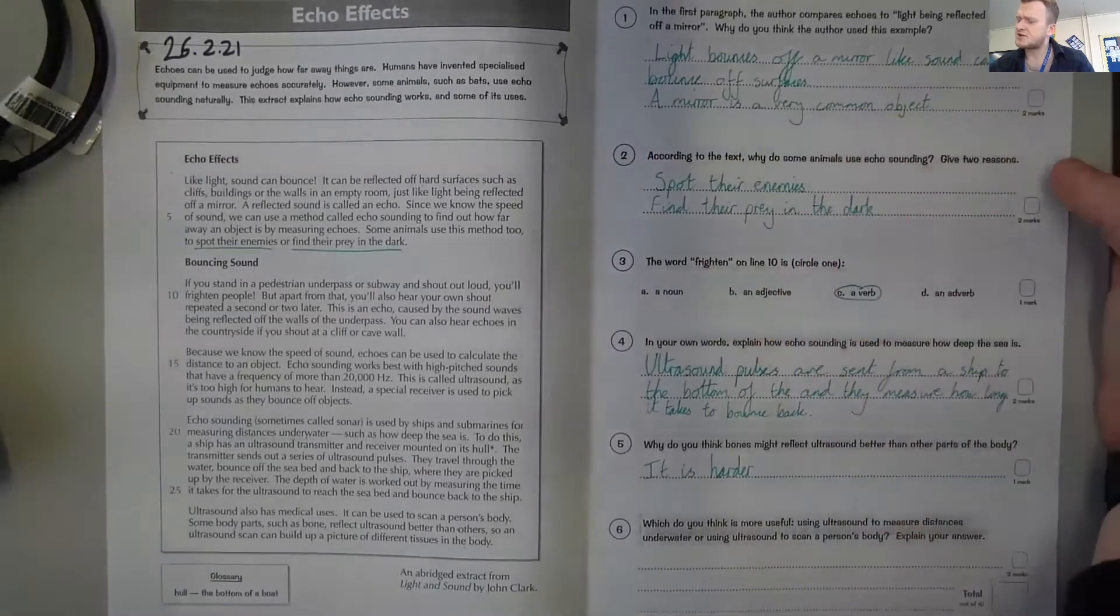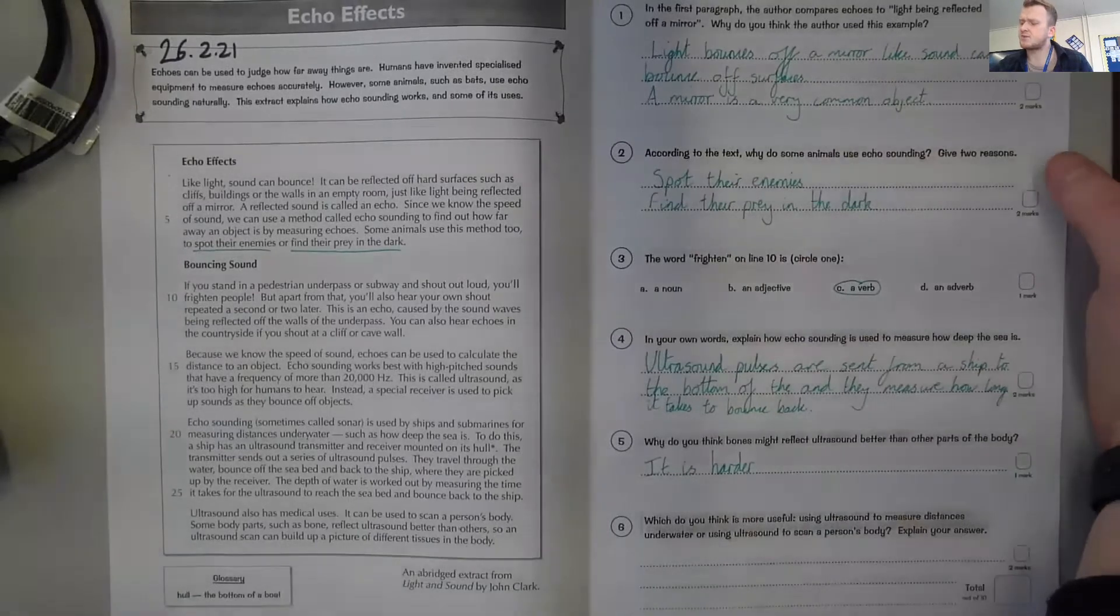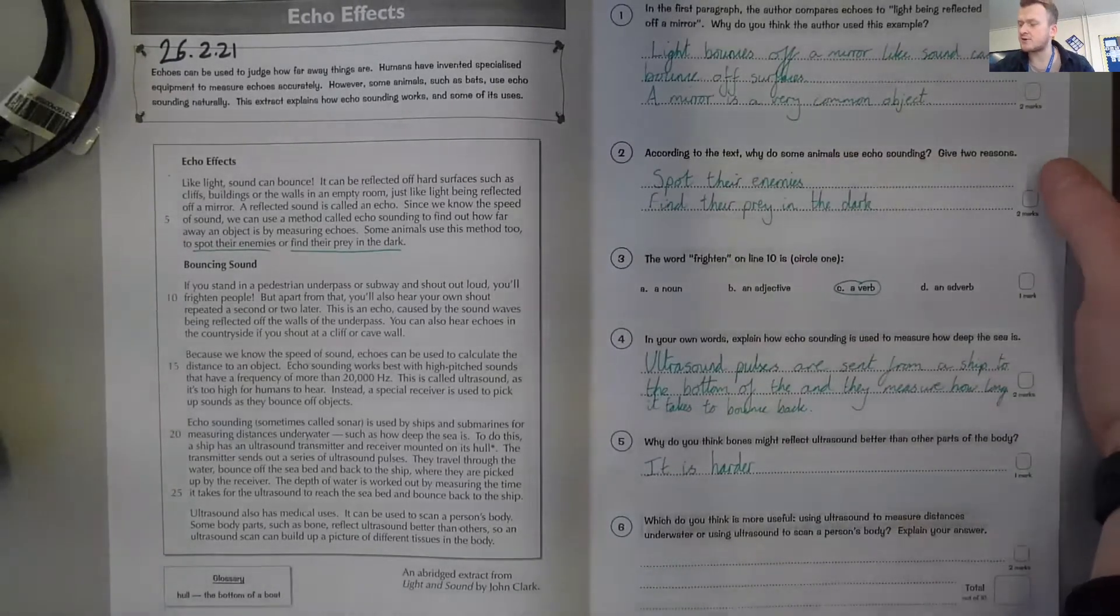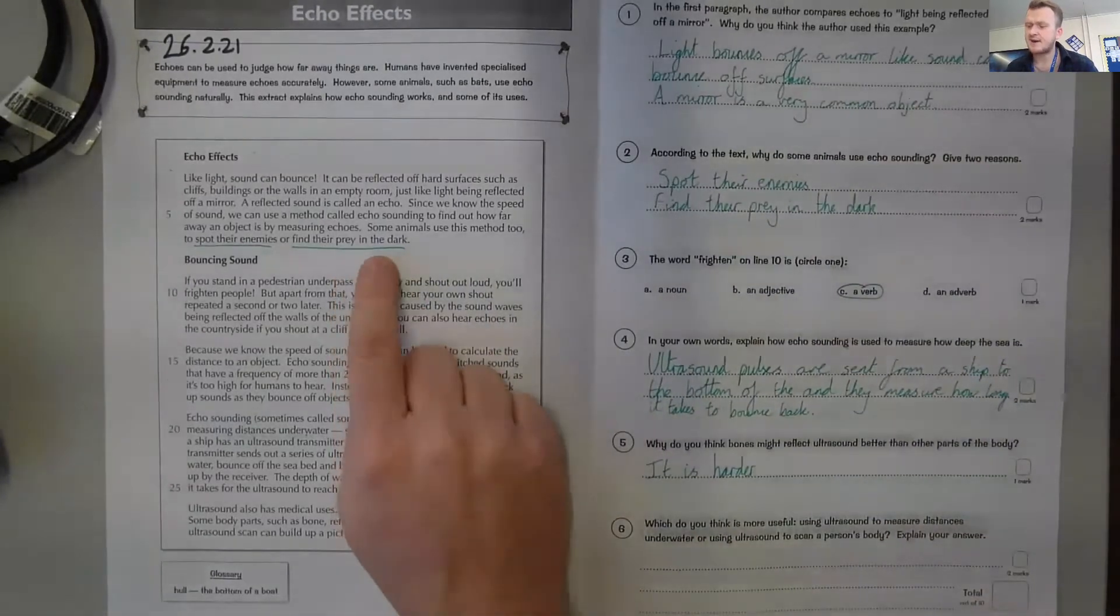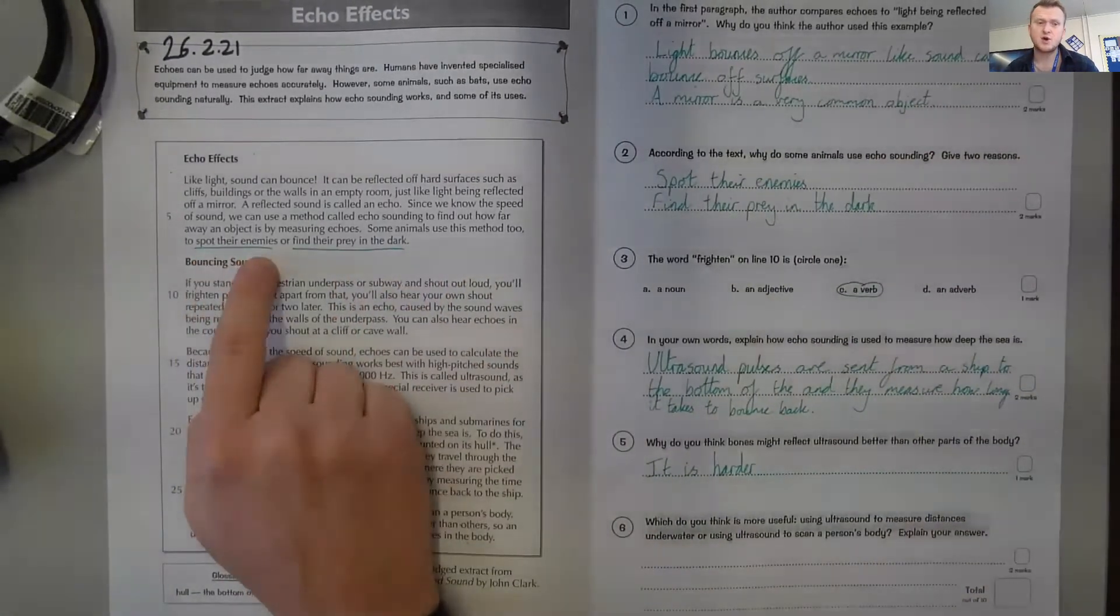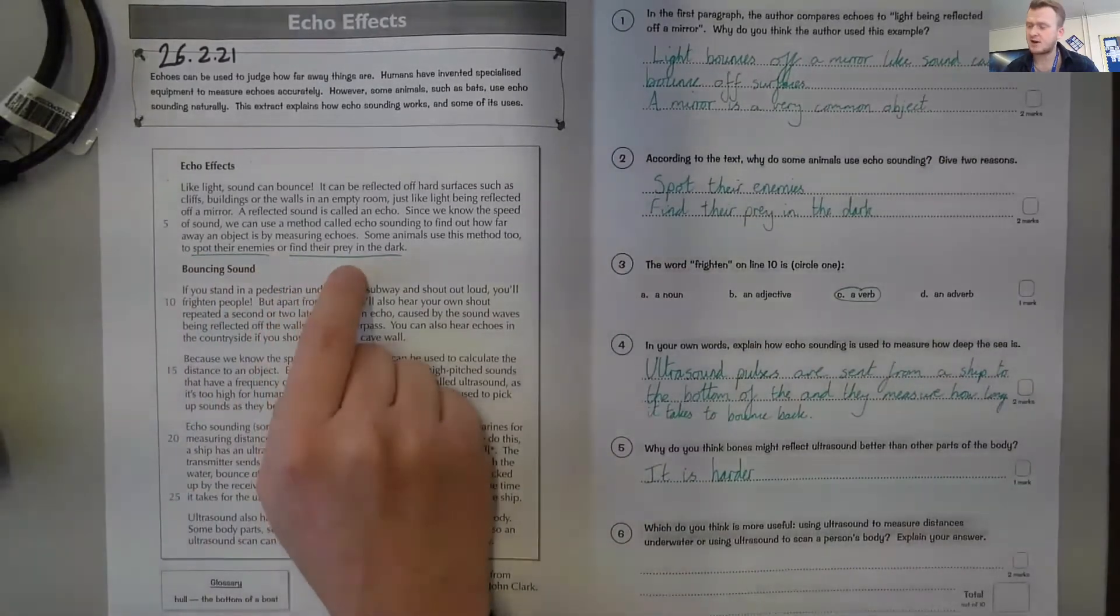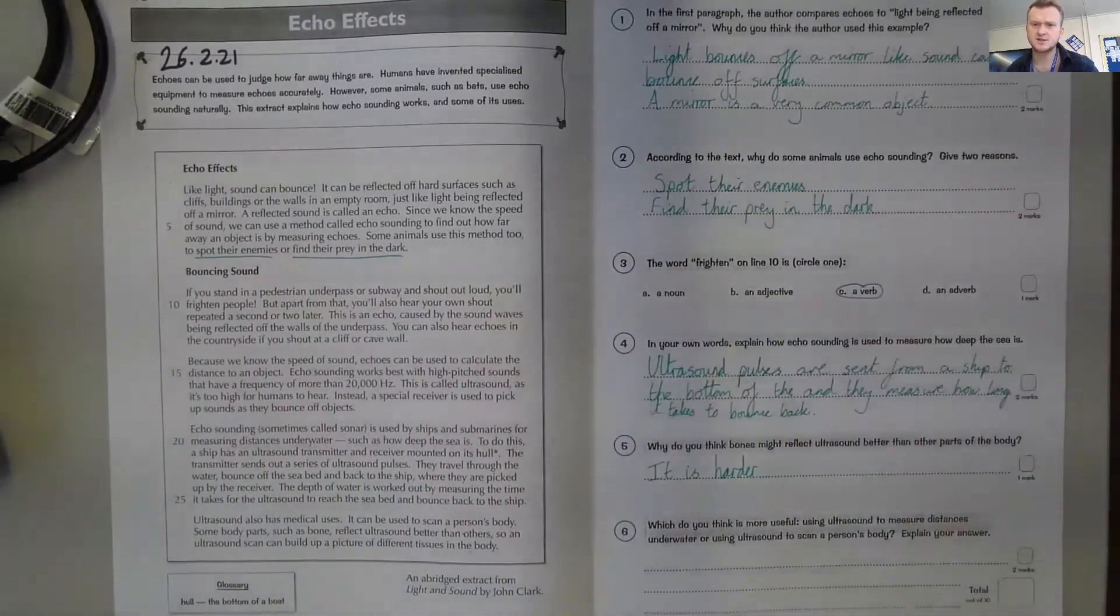Question number two: According to the text, why do some animals use echo sounding? We need to find two reasons. Over here it says that some animals use this method to spot their enemies or find their prey in the dark. So there are the two answers.